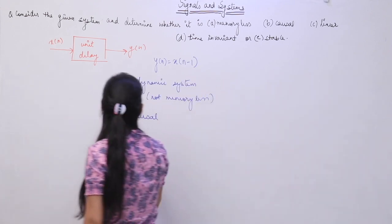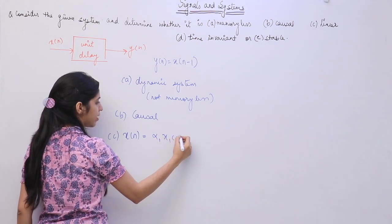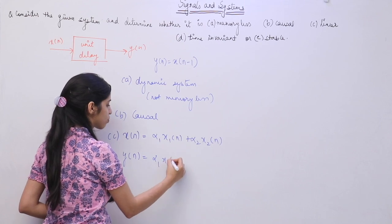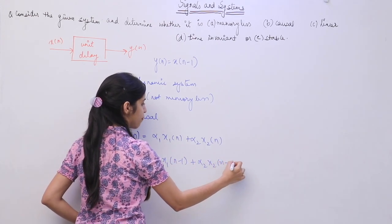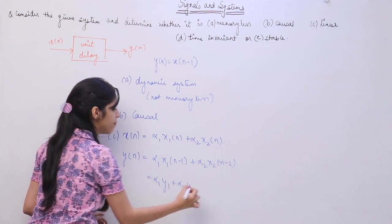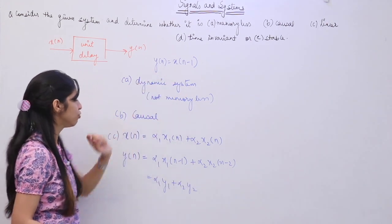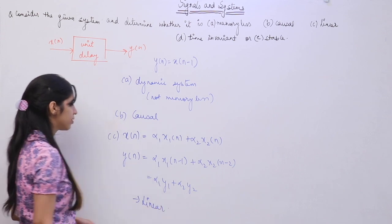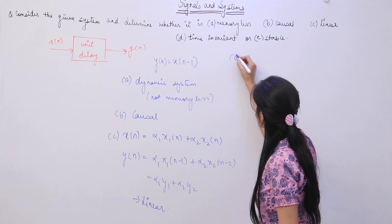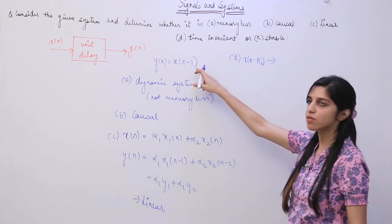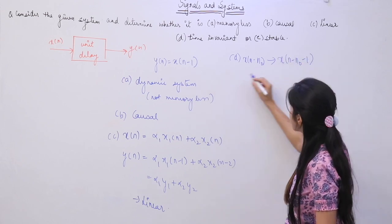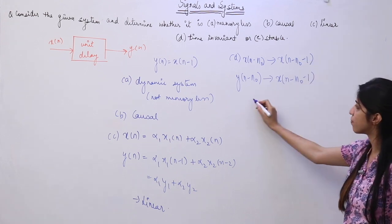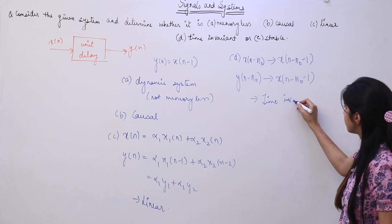To check linearity, I consider input x[n] equal to α1·x1[n] plus α2·x2[n]. When I apply this input to the system, the output is α1·x1[n−1] plus α2·x2[n−1], which equals α1·y1 plus α2·y2, satisfying superposition and homogeneity. So this is a linear discrete time system. To check time invariance: producing a delay of n0 in the input yields x[n−n0−1]; producing the same delay in the output also gives x[n−n0−1] — they are the same, so this is a time invariant system.